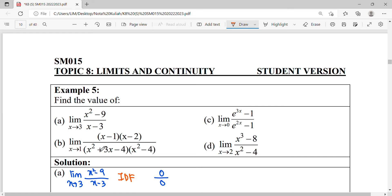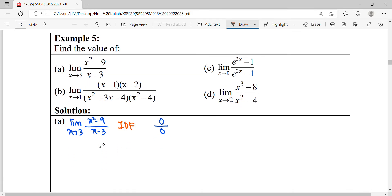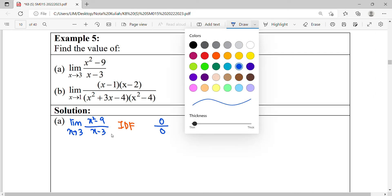You repeat the process of the function. So your first try must be trying substitute value first. It's not straight away, go to factorize, go to conjugate. So with the situation where your function is IDF, we look at this function, it's polynomial form, right? Quadratic over linear. So polynomial form we can factorize.